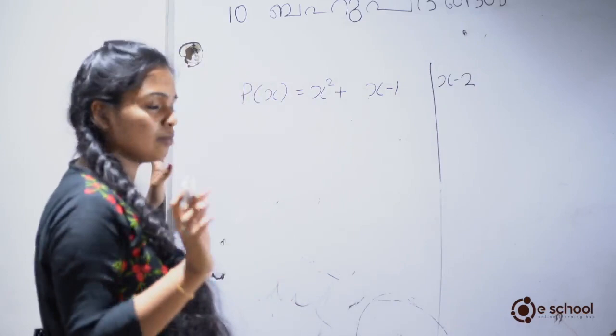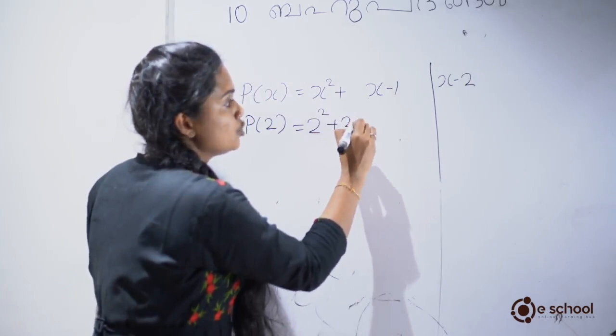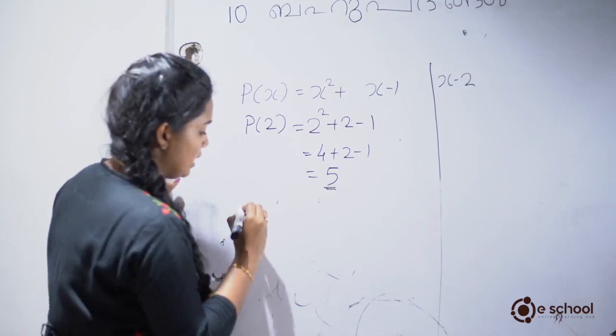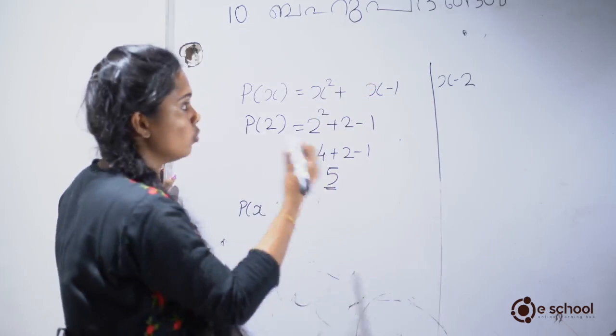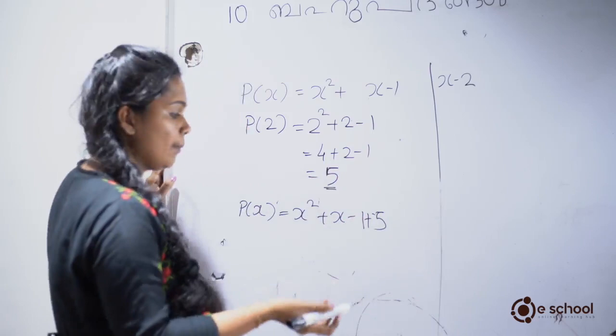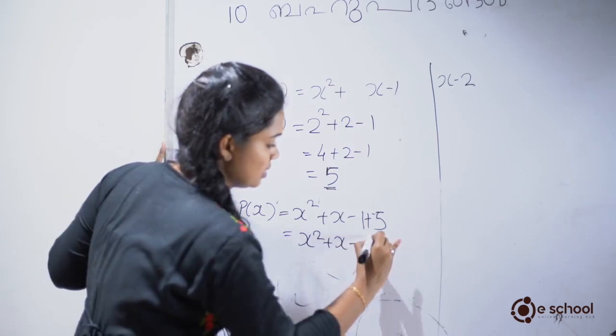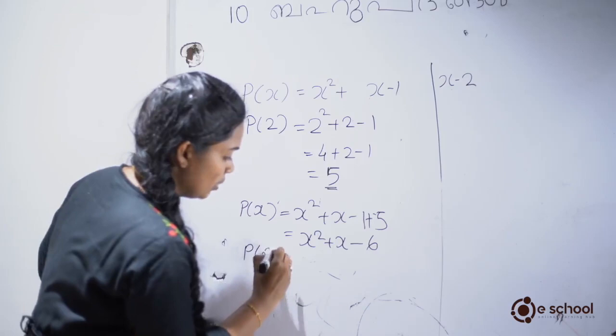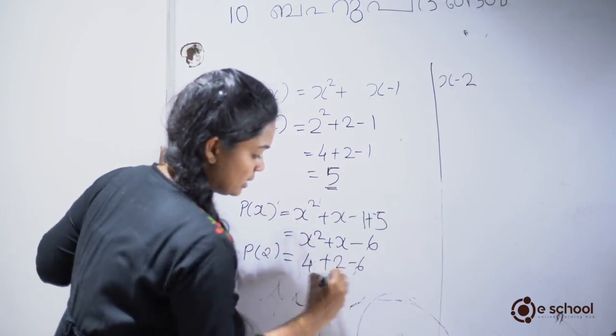Now we will check with P of 2: 2 squared plus 2 minus 1 equals 4 plus 2 minus 1 equals 5. Now P of x equals x squared plus x minus 6. We check: 2 squared plus 2 minus 6 equals 4 plus 2 minus 6 equals 6 minus 6 equals 0.